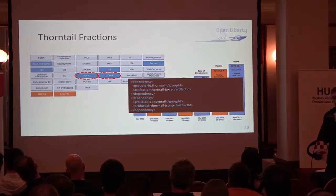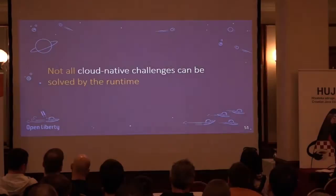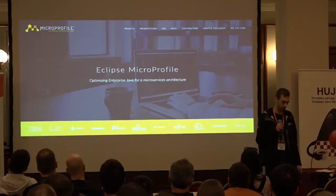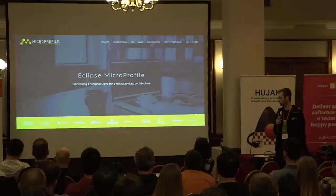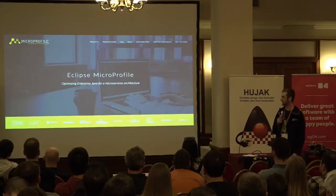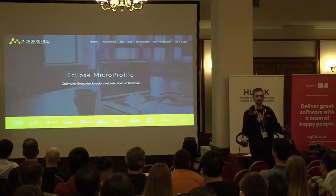We're not the only people doing this — Thorntail by Red Hat and JBoss also lets you pick and choose dependencies, bringing your application server size down to a minimum. Not all cloud-native challenges can be solved by the runtime. The problem with Java EE was it was going way too slow for the world of cloud. So a lot of companies came together and created a new list of specifications called MicroProfile.